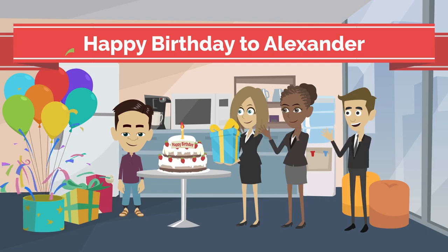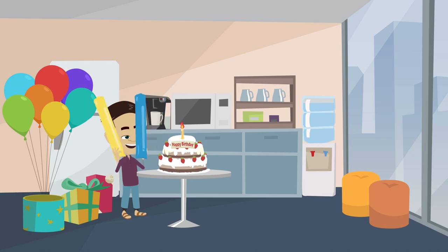He was christened Alexander Bell, but when he was 10 years old, he pleaded with his father to have a middle name just like his two other brothers. On his 11th birthday, his father agreed and allowed him to adopt the name Graham, which he chose out of respect for Alexander Graham, a Canadian family friend.